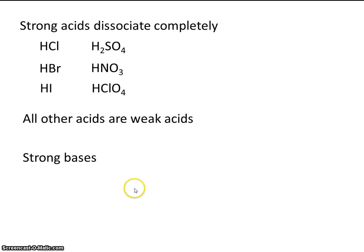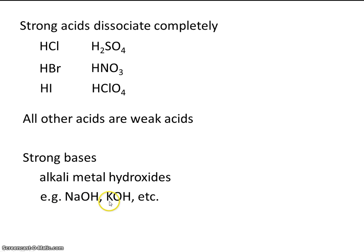There's also strong bases. Strong bases are typically alkaline metal hydroxides. You know what the alkaline metals are. Those are metals from group one on the periodic table. So for example, sodium hydroxide, potassium hydroxide, and other alkaline metal hydroxides from the first group on the periodic table. So this is just a few of the strong bases.